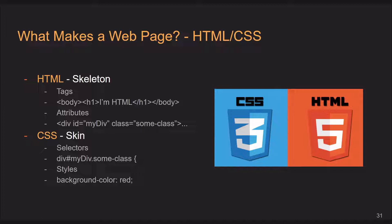HTML also feeds into CSS, which acts as the skin and face of the whole webpage. You use things like selectors — so if we wanted to select our div up here, we could identify it by its ID and class in CSS, and then apply styles to it. For example, setting the background color to red. This is a lot of fun to play with — if you go in and inspect element, you can mess around with web pages, see how it works, and highly recommend you get some experience messing around.